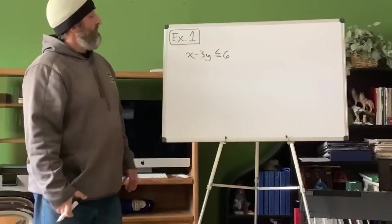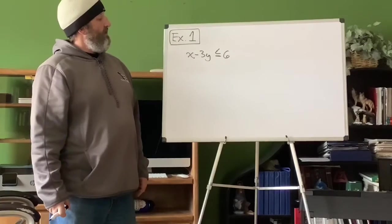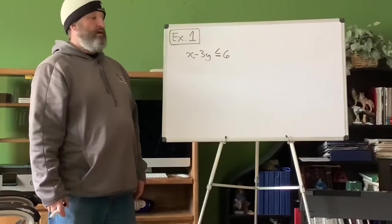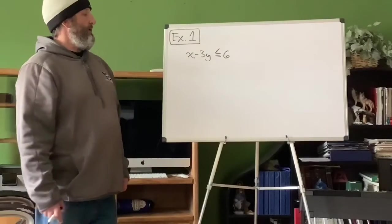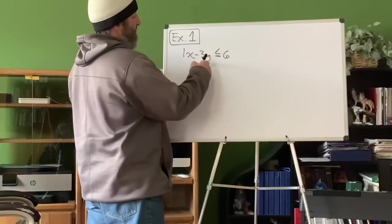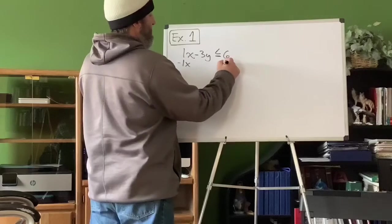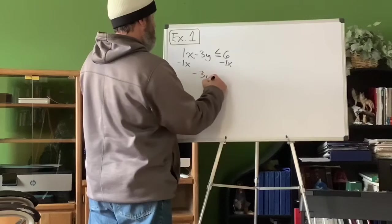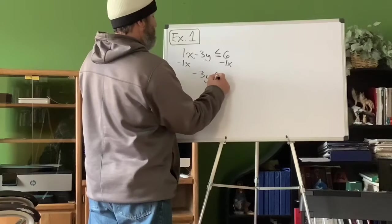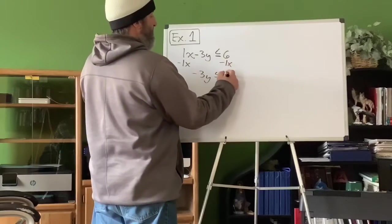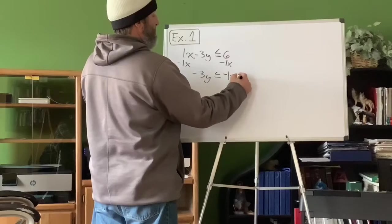Example one: x minus 3y is less than or equal to 6. Push pause and get that written down. I've got 1x — I can put a 1 in front of that. Trying to get my y alone, I subtract 1x from each side. That gives me negative 3y is less than or equal to negative 1x plus 6.